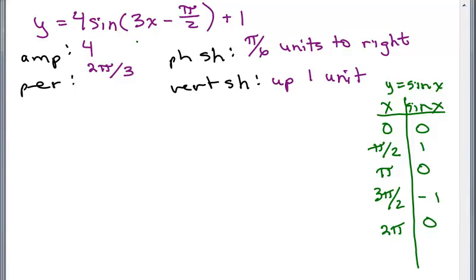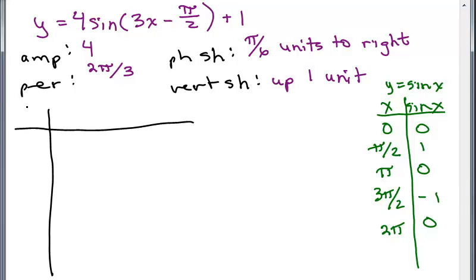Our next step is to figure out the ordered pairs that will be on this graph. For y equals sine of x these are the five key points, and we need to find the five key points for ours. The phase shift is π over 6 units to the right, so our first x-coordinate will be 0 plus π over 6, which is π over 6. We may want to change the denominator depending on the period and what the next x-coordinate is going to be.